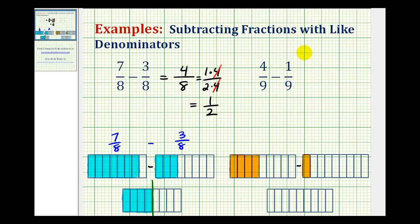For 4 ninths minus 1 ninth, again, the denominator is going to stay 9. The numerator is going to be 4 minus 1, which is equal to 3.